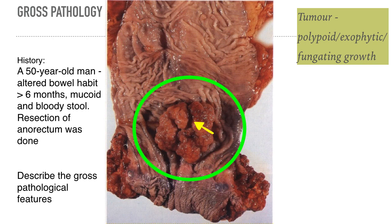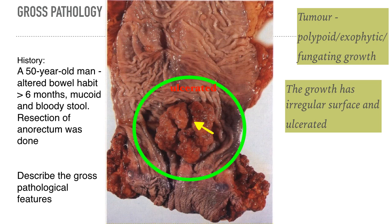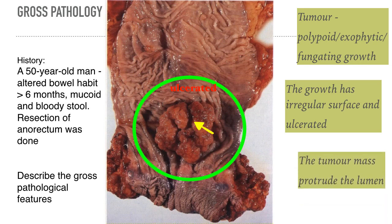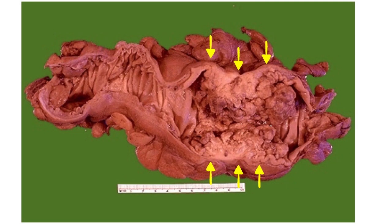On the surface of the tumor, there is ulceration. Therefore, the growth has an irregular surface and is ulcerated, and the tumor protrudes into the lumen. You might see different gross pathological features but with more or less similar clinical presentation. You can still appreciate the tumor growth as shown by the arrows.